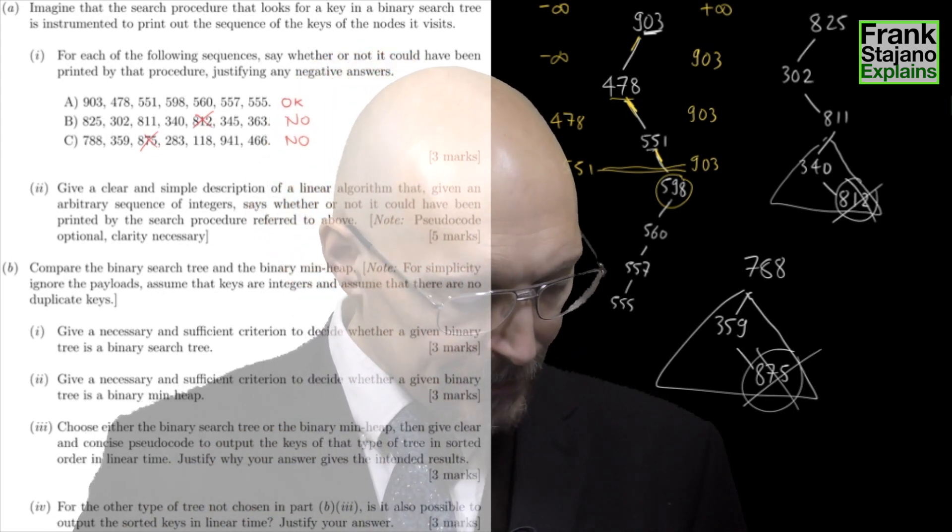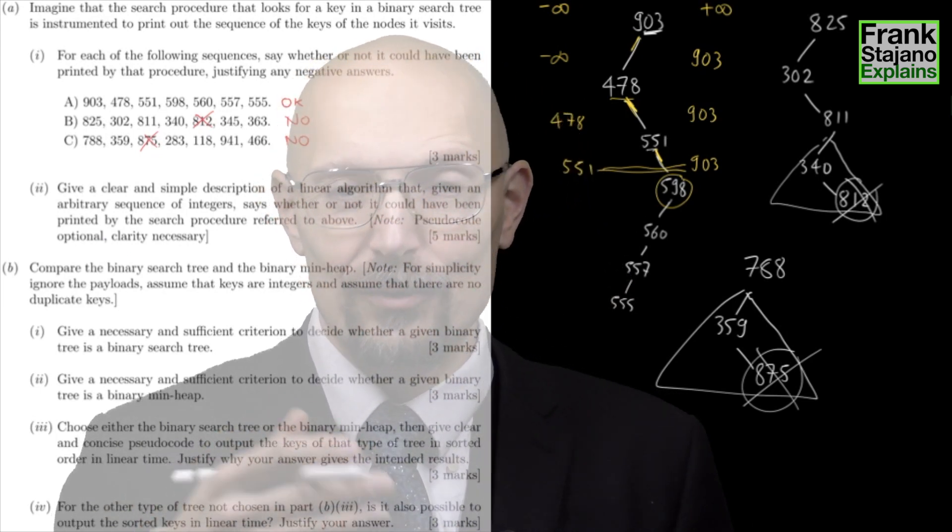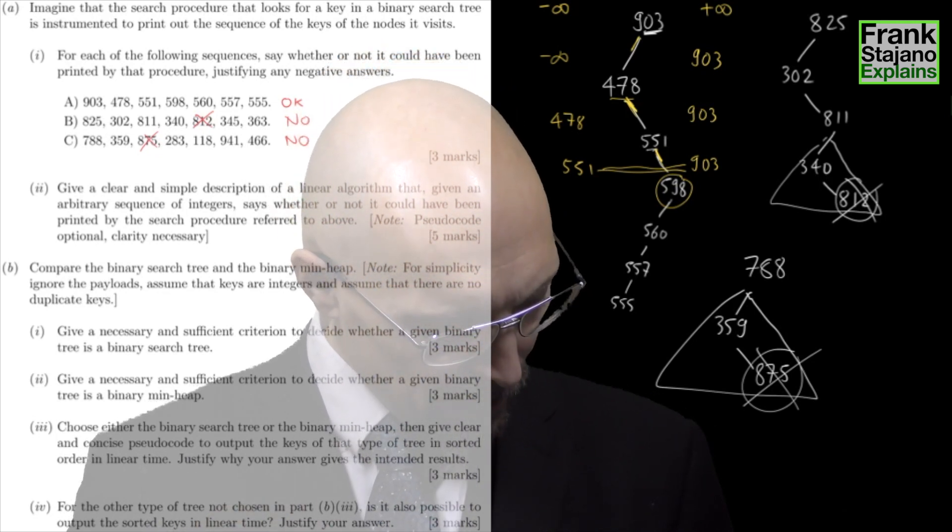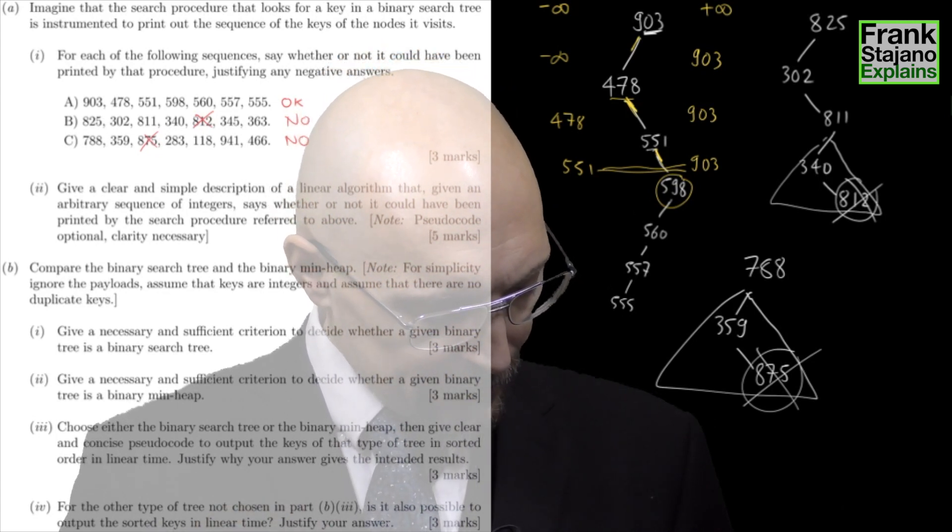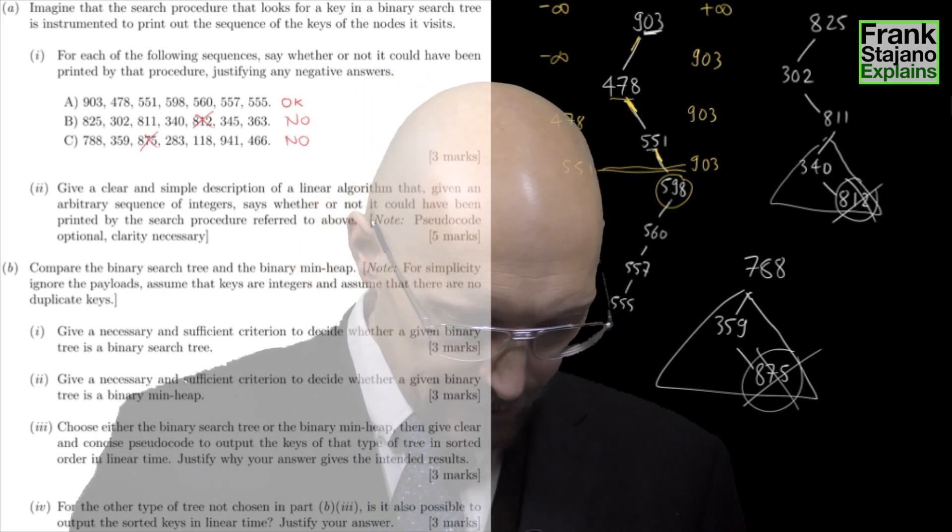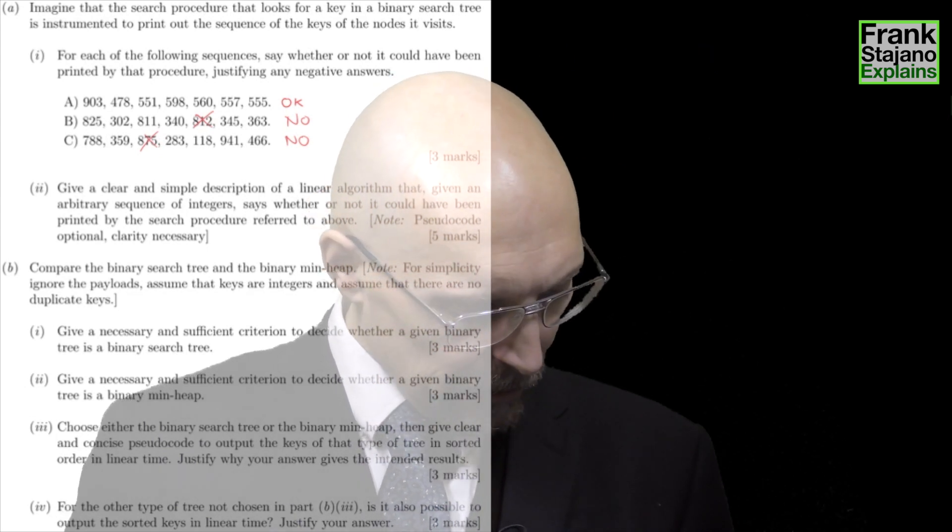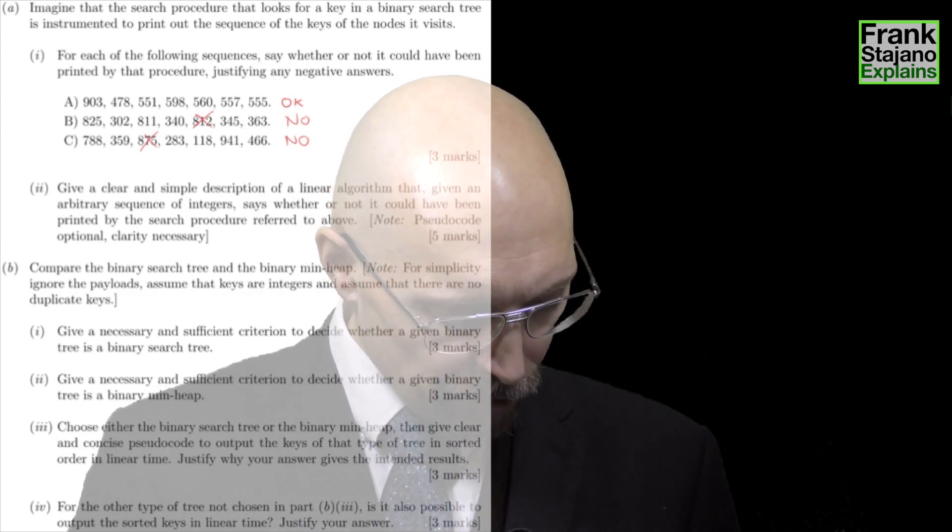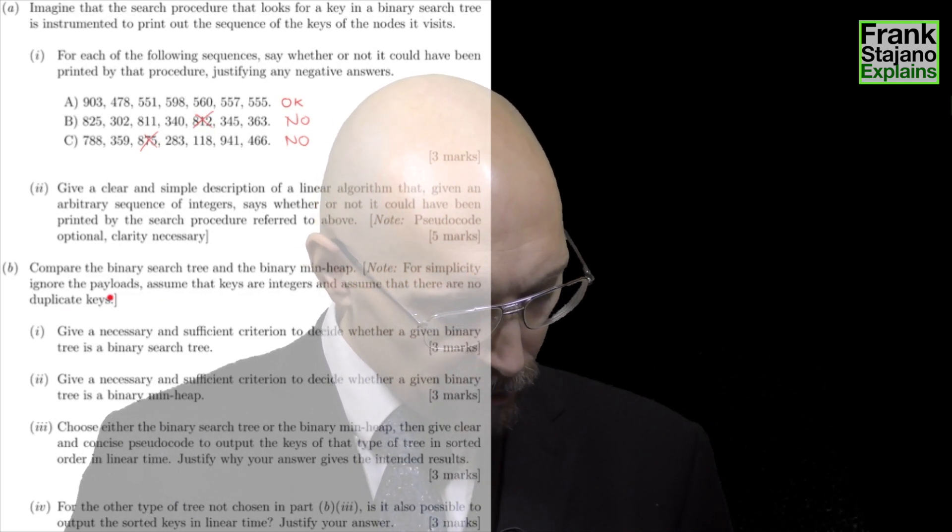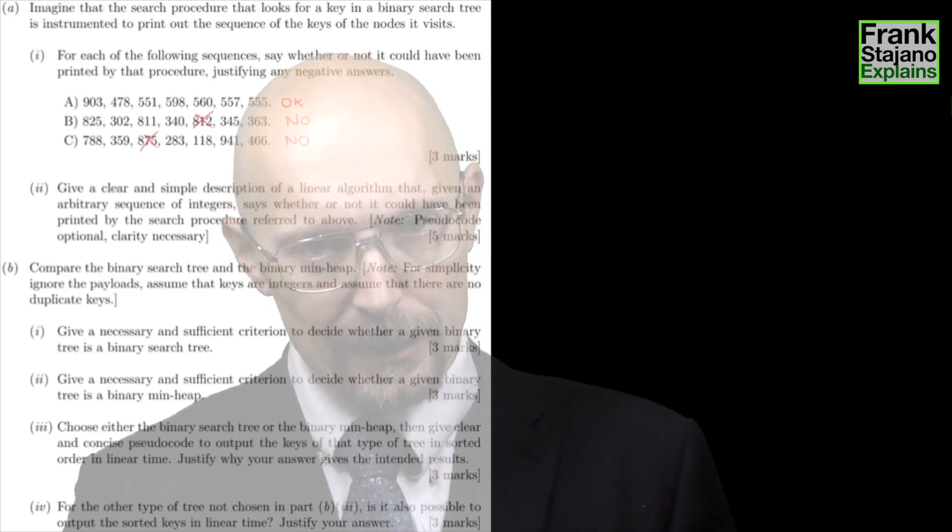So there we go. And since it says the pseudocode is optional, then so long as I have been sufficiently clear, then I have earned my five marks by explaining this. Next, compare the binary search tree and the binary min heap. Note for simplicity, ignore the payloads, assume the keys are integers, and assume that there are no duplicate keys.